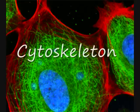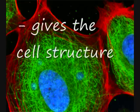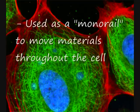The cytoskeleton supports the cell and gives it its shape. It is also used as a monorail by motor proteins to move materials throughout the cell.